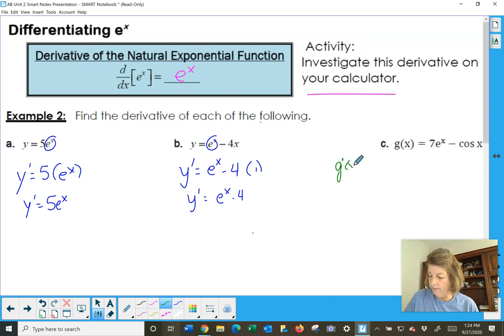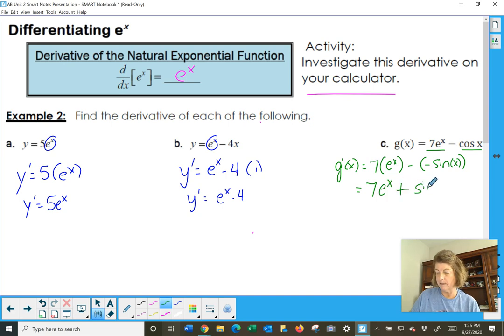g prime of x equals, well, this one's easy. Pull the 7 forward. It's just a multiplier. The derivative of e to the x, it's e to the x. And the derivative of cosine is negative sine. That's just kind of a tricky one. You just have to remember that it's negative. And we get 7 e to the x. This will turn out to be a plus sine of x. And that is our g prime of x. They're not bad, are they?